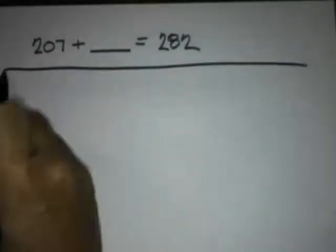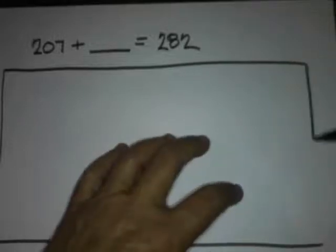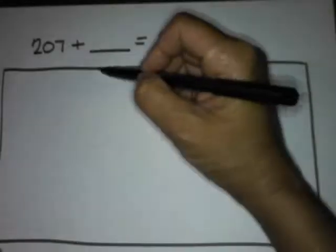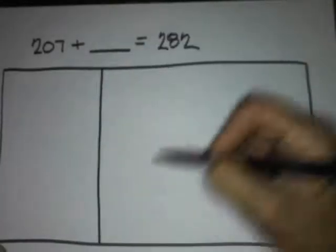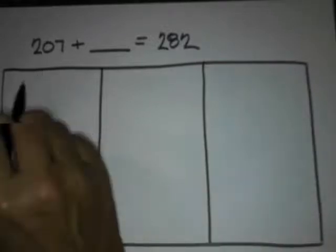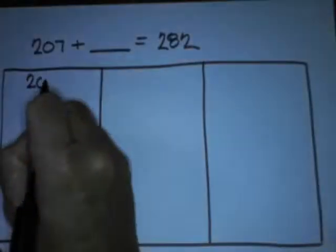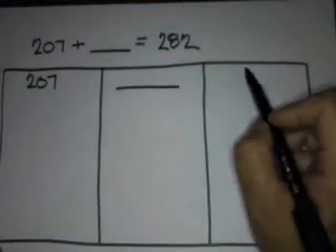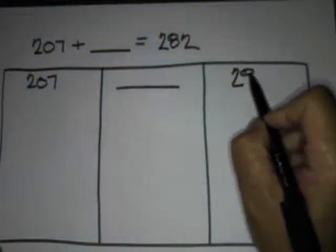First you draw a box. Now we're going to divide the box into three sections. In the first section we write 207, then we have the unknown, then we have 282.